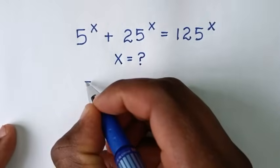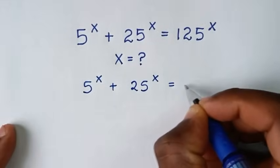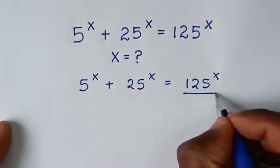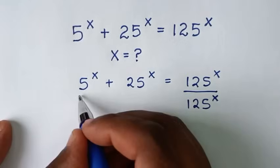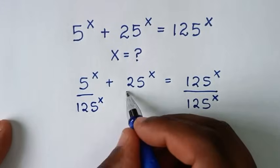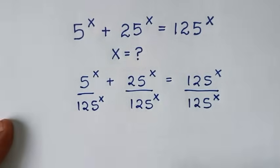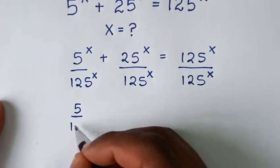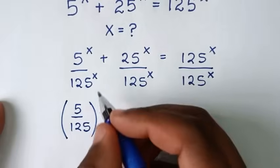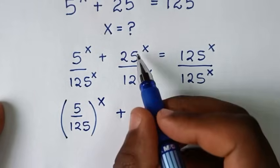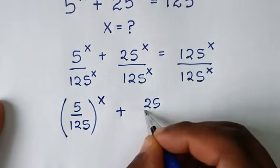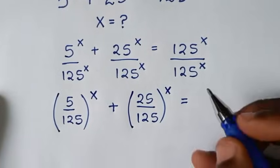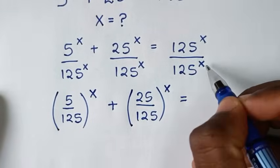From our problem, 5 power x plus 25 power x is equal to 125 power x. In the first step, we'll divide both sides by 125 power x — dividing on this side, this side, and here — so that 125 power x divided by 125 power x equals 1.